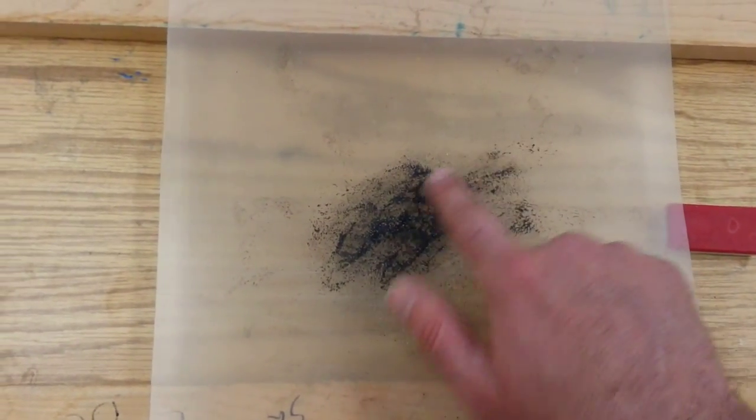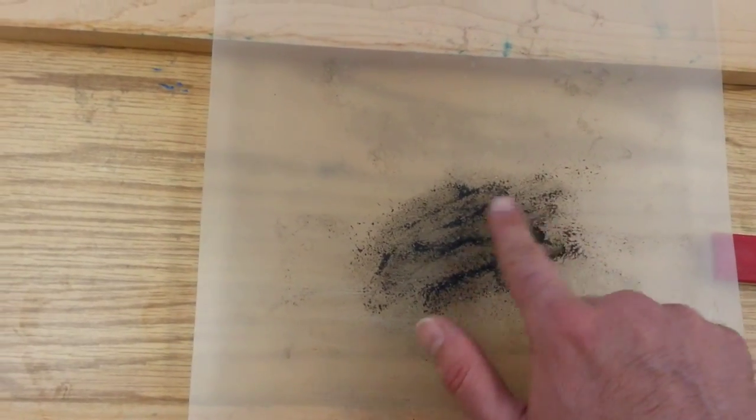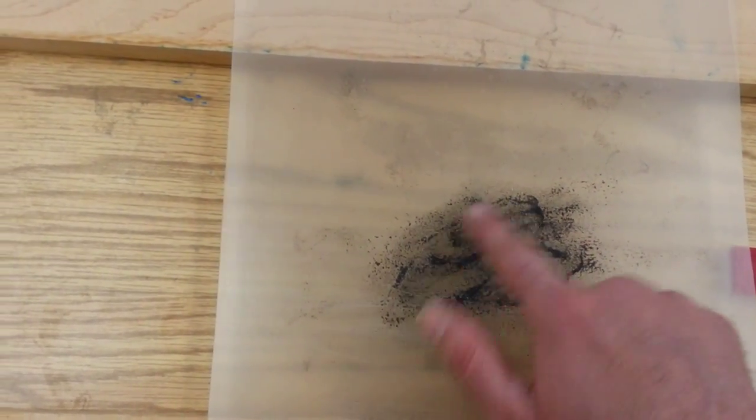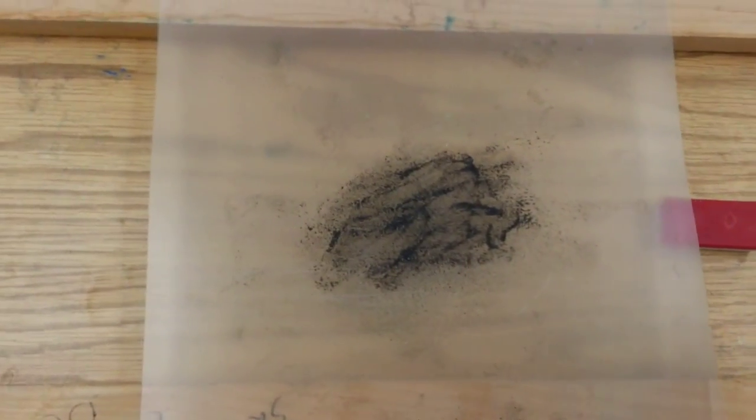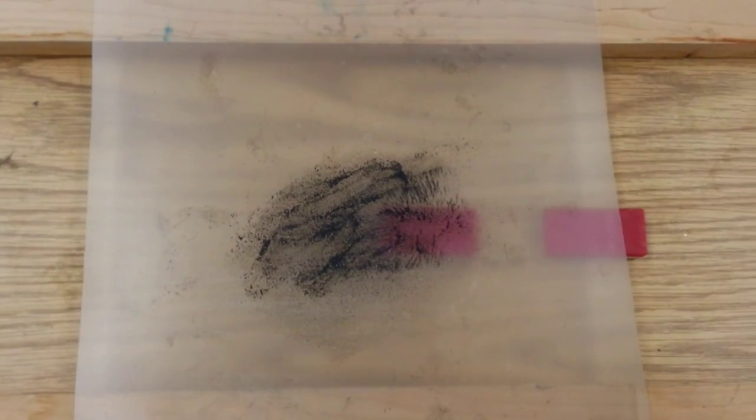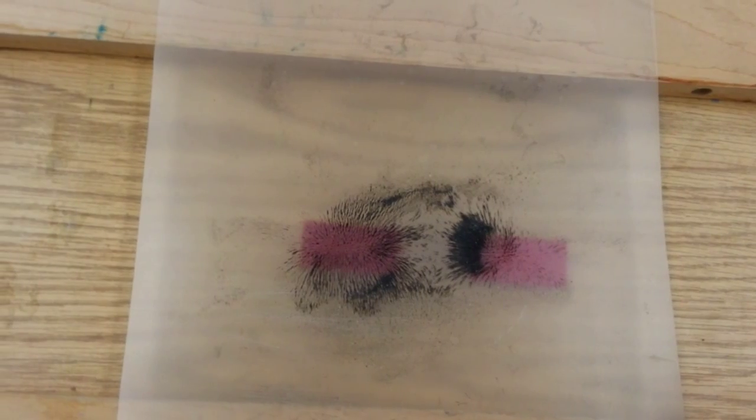I just spread out the filings on here. You can spread them out fairly thin in a nice random array. It doesn't take many to do this. And I'm just going to show that as we move this over the two magnets, you get some pretty nice effects there.